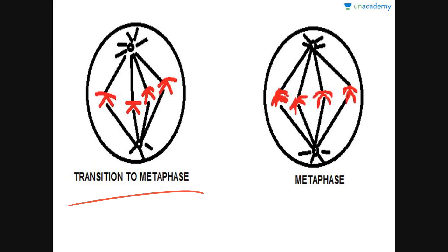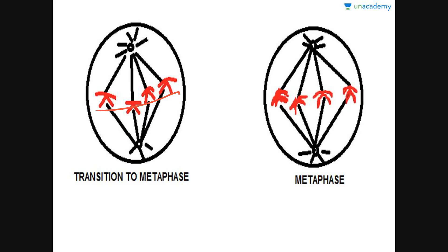During the transition to metaphase, the chromatids are not yet in a particular equatorial plane — some are above and some are below. Finally, in full metaphase, all the chromosomes are aligned at the equatorial plate.